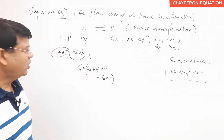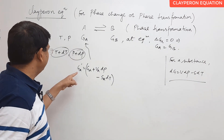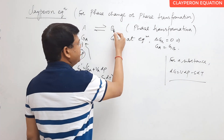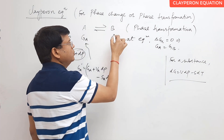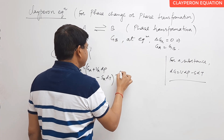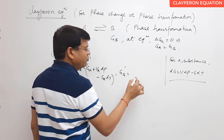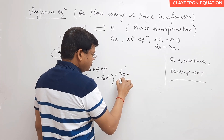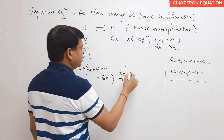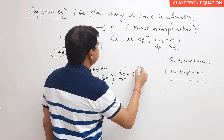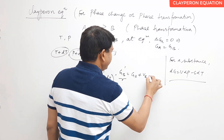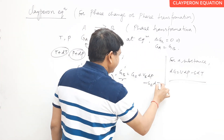Similarly, when pressure and temperature are changed by a small amount, the Gibbs free energy for phase B also changes. The new value becomes: G_B' = G_B + V_B dP − S_B dT. These are the Gibbs function values at the new equilibrium conditions.